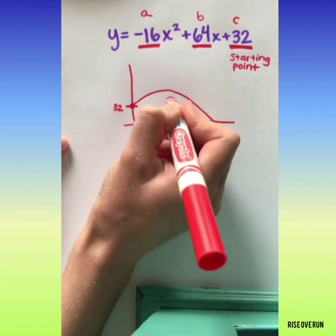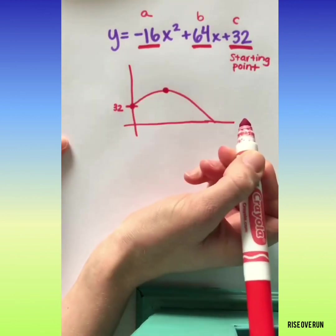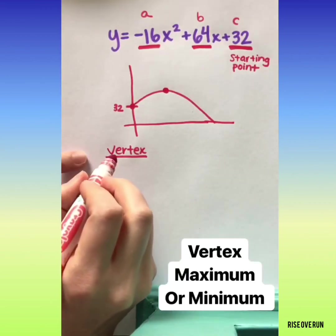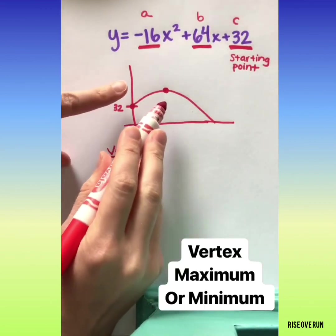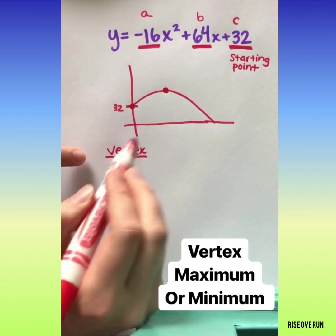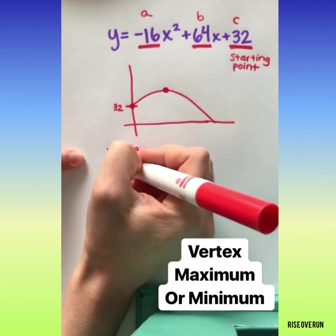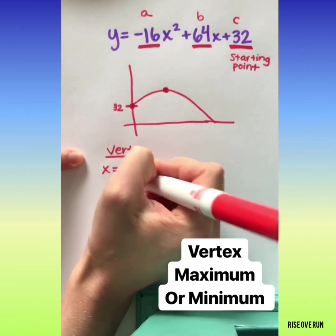Now let's try to find this maximum height, which happens to be the vertex. To find a vertex, whether it's a maximum or a minimum, it doesn't matter, but to find any vertex of a quadratic in standard form, you can use the simple equation negative b over 2a.